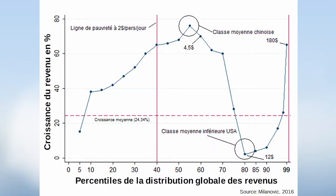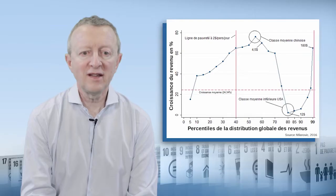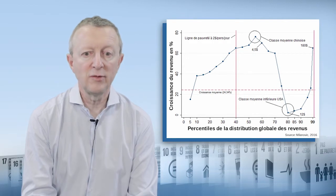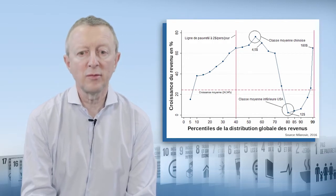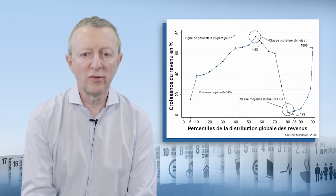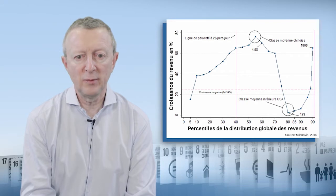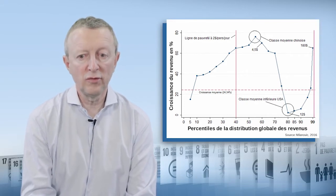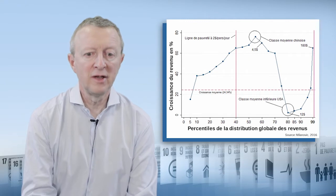Horizontally, you have the average income in 1988, and vertically, the growth of revenue between 1988 and 2008. Note that 40% of the global population in 1988 had an income of less than $2 a day. The great winners of globalization are in the middle of the distribution and at the very top, translating the dual upward evolution of the income of the Chinese middle class and the top 1% richest in the world. The poor with revenues lower than $2 in 1988 also gained, but less so, and the very poorest gained less than 20% over that period.